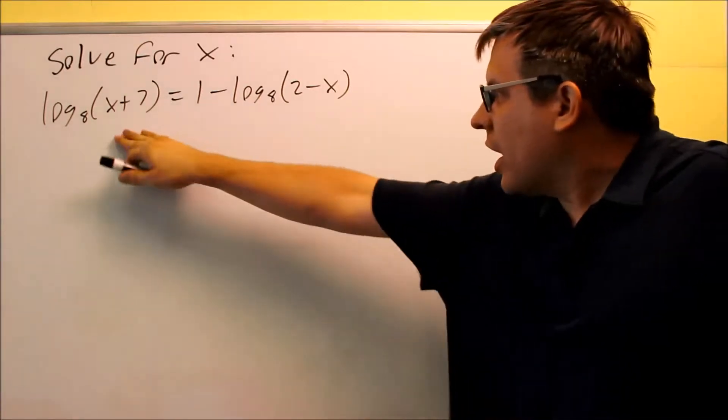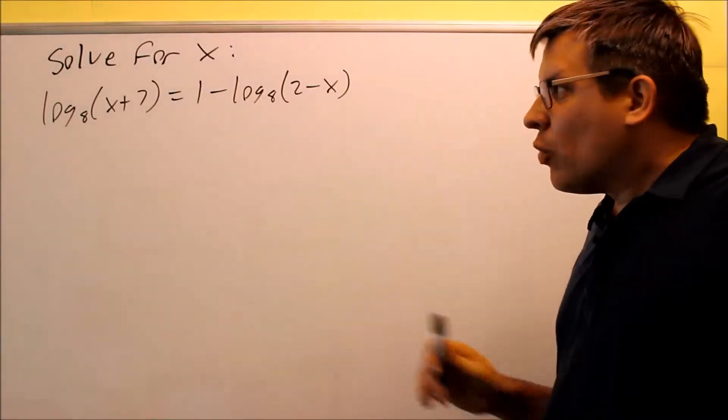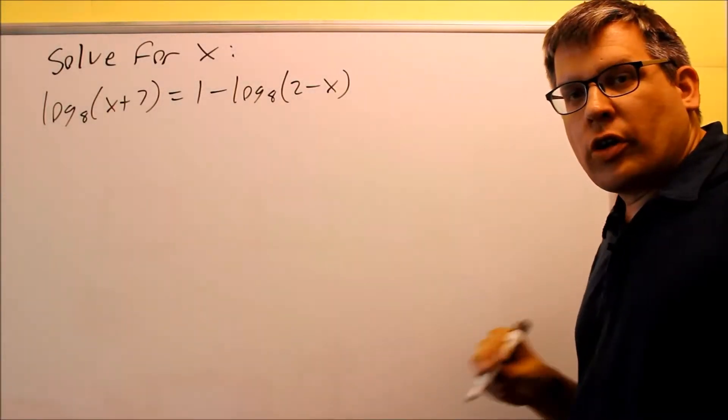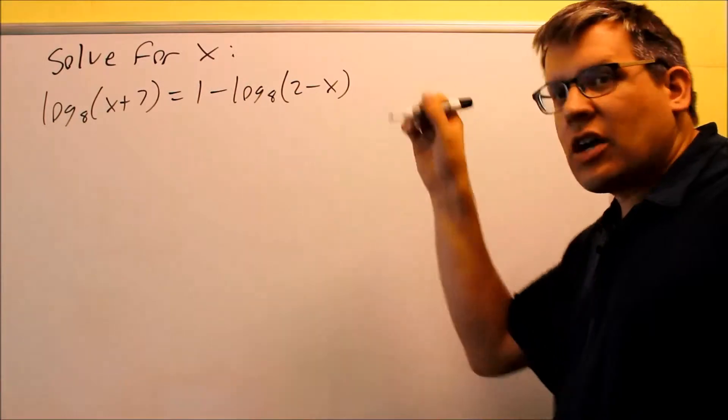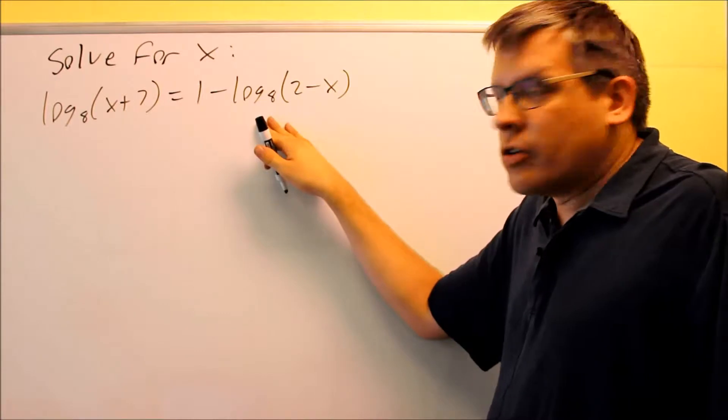So on this one, we have two different logs, and we have one here that's not a log, so we can't use that same process as before. That only works by canceling out the logs from both sides. You can only do that if you've got one log on one side and one log on the other.